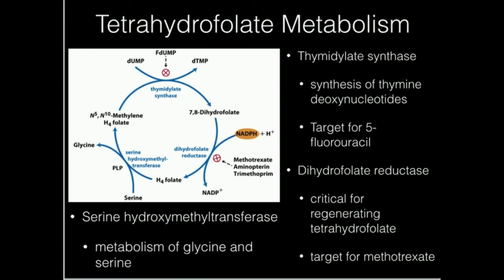The problem is that 5-fluorouracil doesn't only target cancer cells — it targets all your cells. This is one reason why finding a good cancer cure is so difficult: you end up killing your own cells. In many cases, chemotherapeutic agents are essentially carcinogens given to kill cancer, with little cellular specificity.